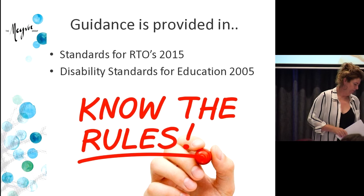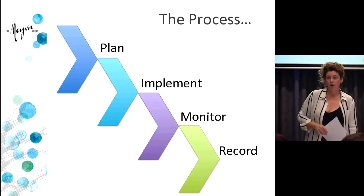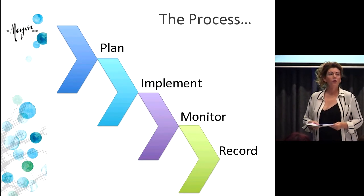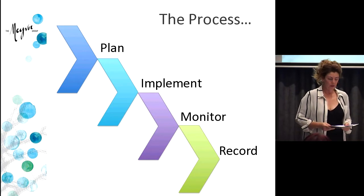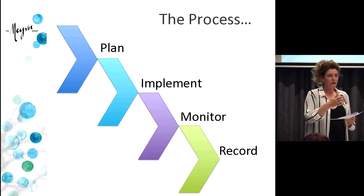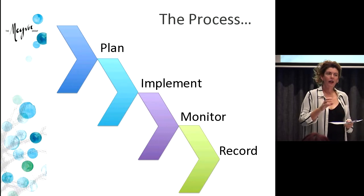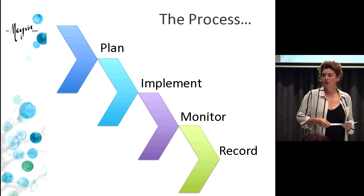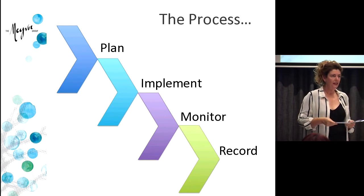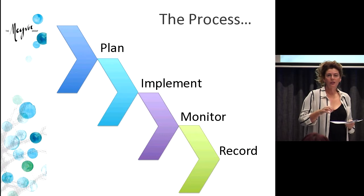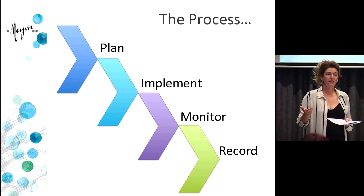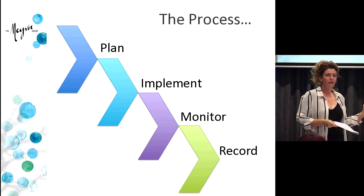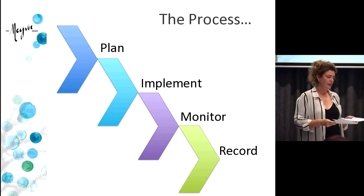Have a look at the guidance available to help you think about the process you might go through, which will generally involve four steps. You'll go through a planning process where you think about what's possible in regards to reasonable adjustment. Then you'll implement what you've planned. Within that there'll be a monitoring aspect — watching to make sure what you put in place is working, and if not, how to adjust it. And then there's record keeping that you need to do to meet the legislation as well as the SRTOs. Those four steps are what we've included in this process sheet.